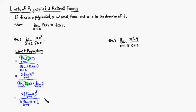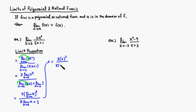We can bring the limit inside the exponent: it's 2 times (limit of x as x approaches 2) raised to the third power. Since the limit of x as x approaches 2 is 2, this gives us 2 times 2³ over 5 times 2 plus 1. That's 2 times 8 = 16, over 10 + 1 = 11. So the limit is 16/11.